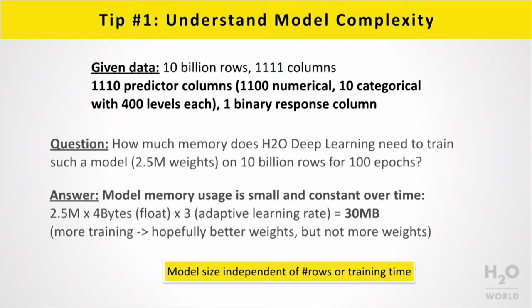So those two models — four layers of 400 neurons versus one layer of 500 — are pretty much the same complexity, because the input layer dominates. The four-layer model will be smarter at coming up with nonlinearities and interactions, while the one-layer model is slightly sharper in seeing those features. It's not necessarily clear which will be better. Now, how much memory does running this model on 10 billion rows take? The model is 2.5 million weights times 4 bytes per float — about 10 megabytes. With adaptive training overhead for learning rate and momentum, roughly 30 megabytes. The data has to fit in your cluster, not the model. The model is small and doesn't grow in size as you pass over data more times.